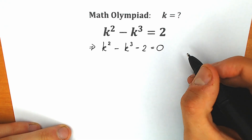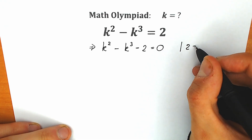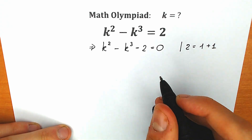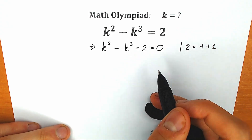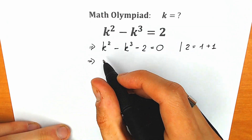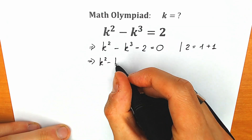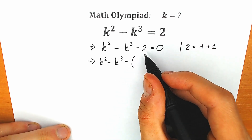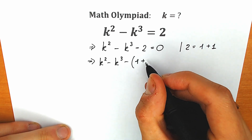Right now, this 2 can be written as 1 plus 1 — a basic step. So we have 2 equal to 1 plus 1, and let's replace this 2 by 1 plus 1. It changes nothing, because this sum equals 2. So we have k squared minus k cubed minus (1 plus 1). Instead of 2, we write 1 plus 1.